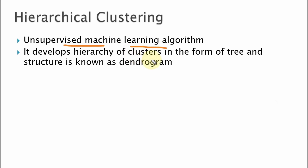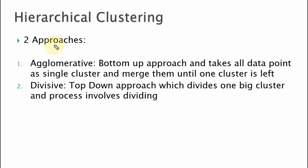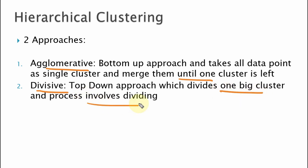Hierarchical clustering develops a hierarchy of clusters in the form of a tree, and that structure is known as a dendrogram. In hierarchical clustering, there are basically two types of approaches. The first is agglomerative and the second is divisive. Agglomerative is a bottom-up approach where we consider each data point as a single cluster and merge them until one cluster is left. Divisive is a top-down approach which divides one big cluster into two different clusters.